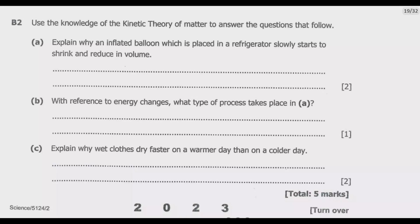Question B2: Use the knowledge of the kinetic theory of matter to answer the questions that follow. Question (a): Explain why an inflated balloon which is placed in a refrigerator slowly starts to shrink and reduce in volume. That's what we need to explain - why does it start to shrink and reduce in volume. But in our explanation we need to use kinetic theory of matter.